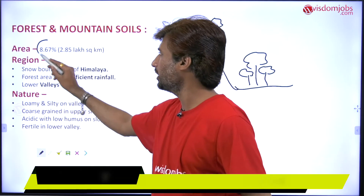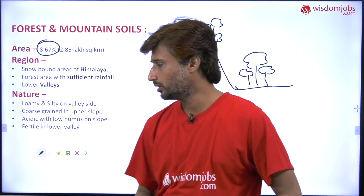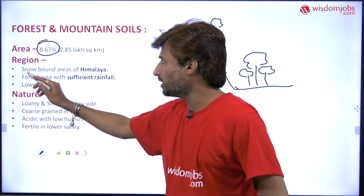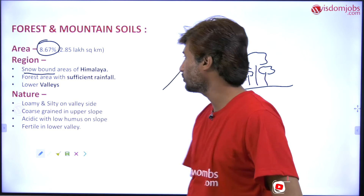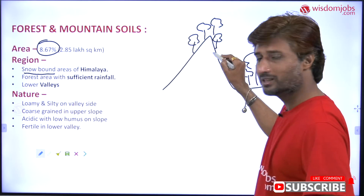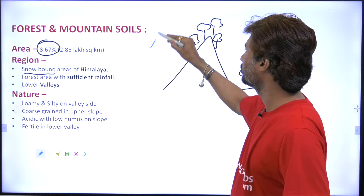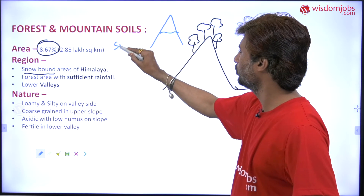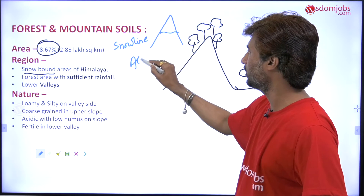It occupies an area of about 8.67 percent, that is 2.85 lakh square kilometers of the total geographical area of India. It is found in the snow-bound areas, which are found in the Himalayas. You can also consider the Western Ghats. Above the snow line, we generally find the alpine forest.